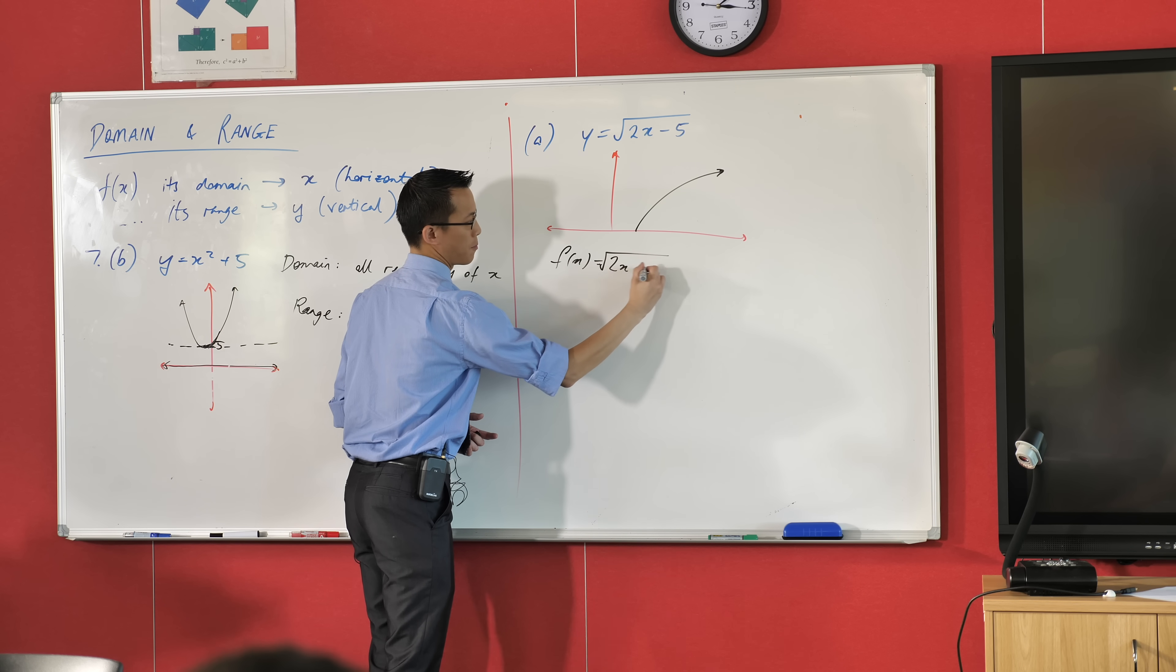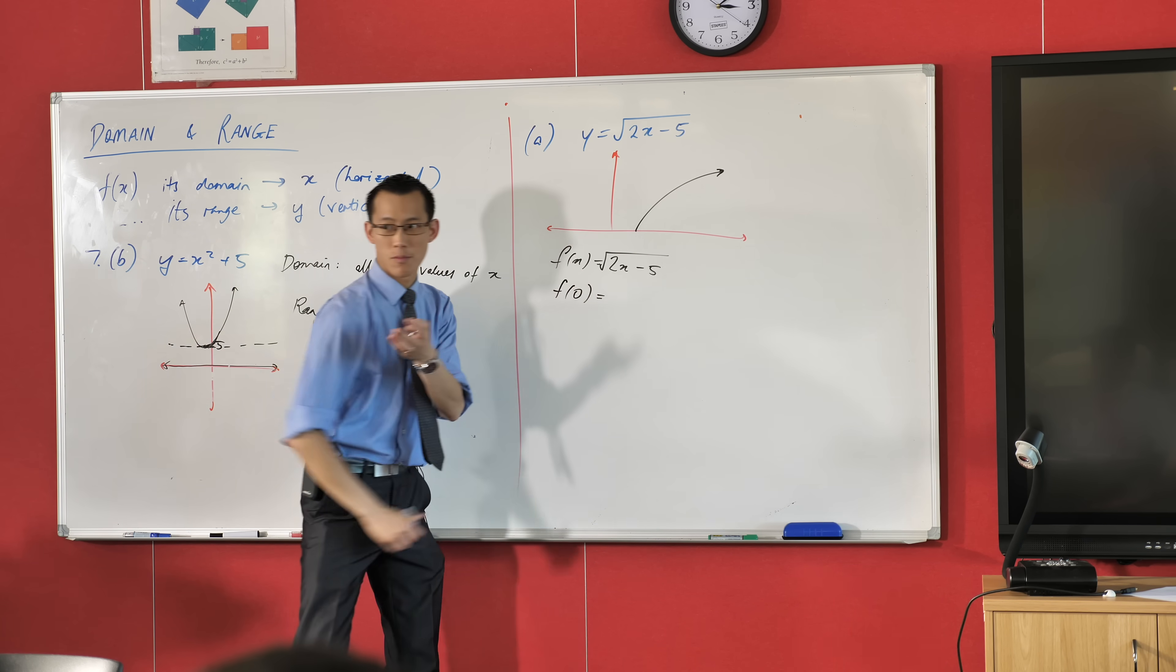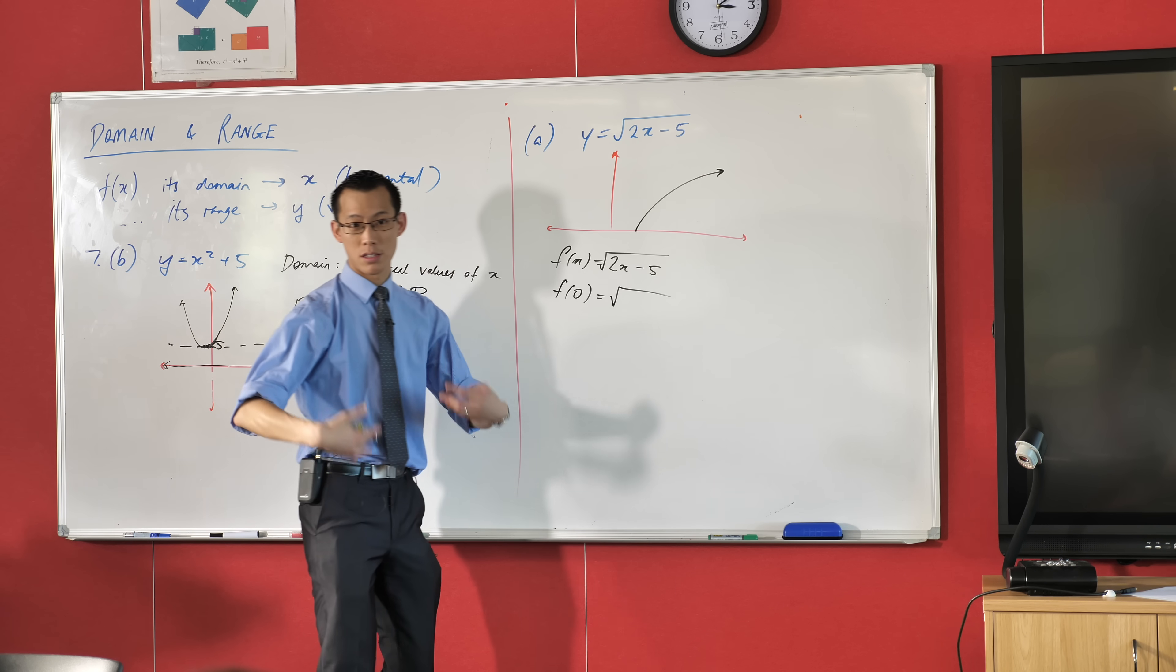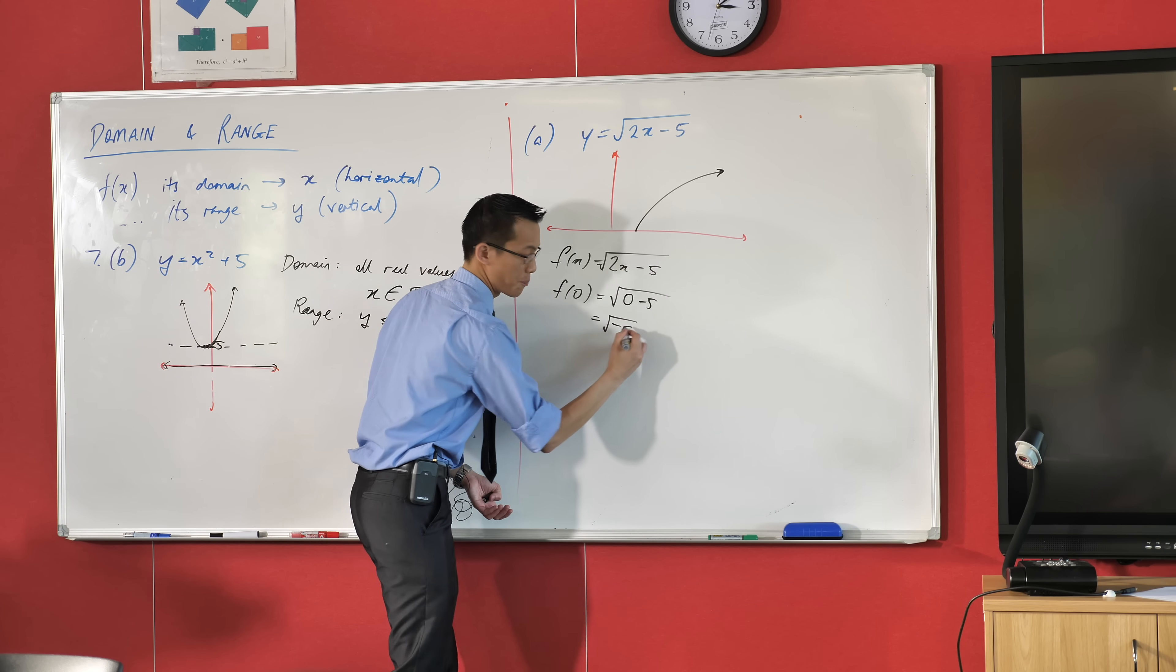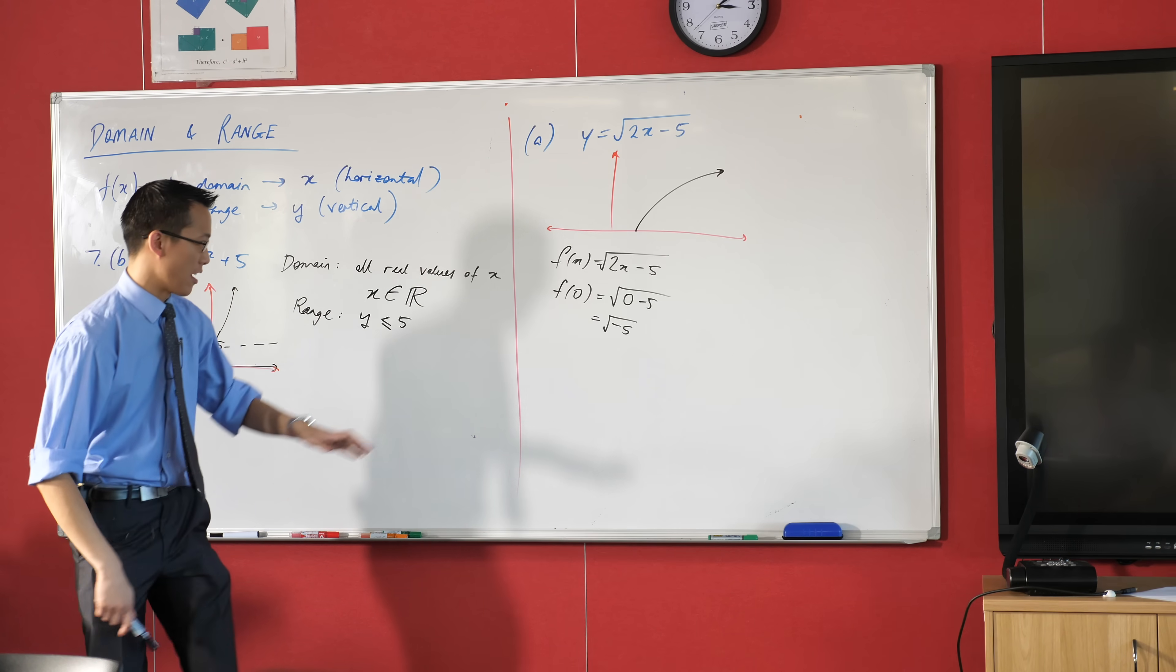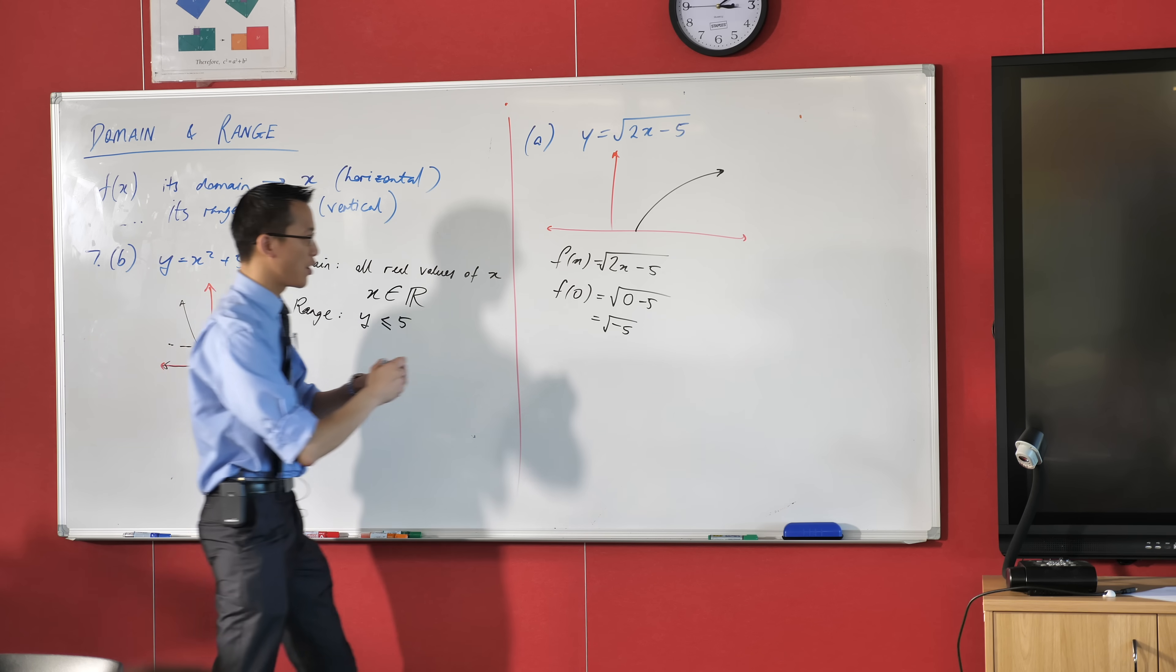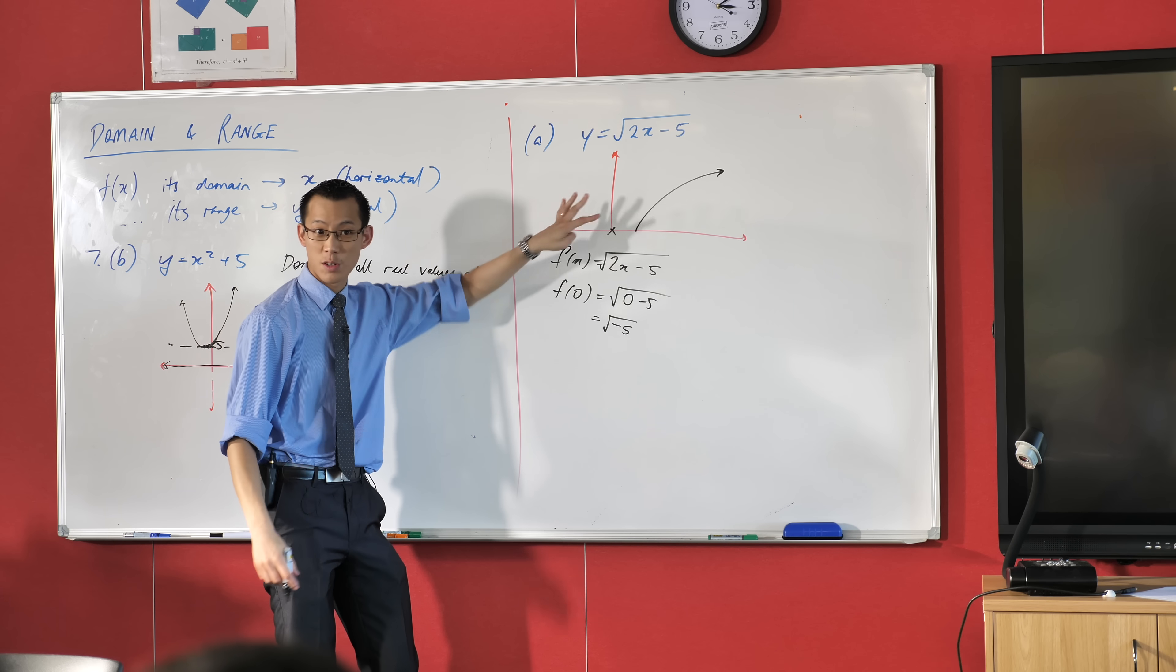If I put in 0, f of 0, everywhere I see an x, I will replace it with a 0. Is that okay? So I get this. 2 times 0, which of course is 0. 0 take away 5, so I'm getting this. And your calculator doesn't like this, does it? It says math error, because I'm like, don't take the square roots of negative numbers, that's what it's telling you to do. So we know that we can't do 0, which is no surprise, here it is. See how it's not on the graph? There's no spot on the graph there.